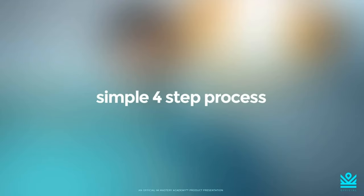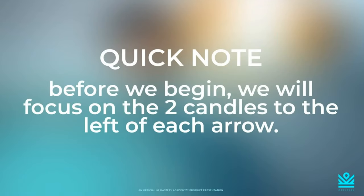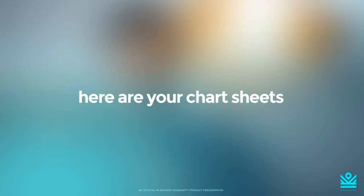When you see these colored arrows populate on your chart, you know exactly what you're looking to do based on the color code. Once you get those arrows, we follow a simple four-step process: B, C, L, S. That stands for Bigger, Cut, Location, Space — and then boom, take a trade. Write this down on your notepad right now: B, C, L, S. This is literally all you need in order to profit with the DeLorean software.